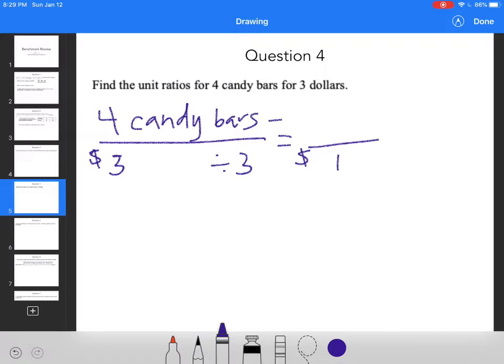So I'm going to divide by three, divide by three. So I can get one and one-third candy bars for a dollar. And I get that because I've got four over three, which three goes into four one whole time with one out of three pieces left over.